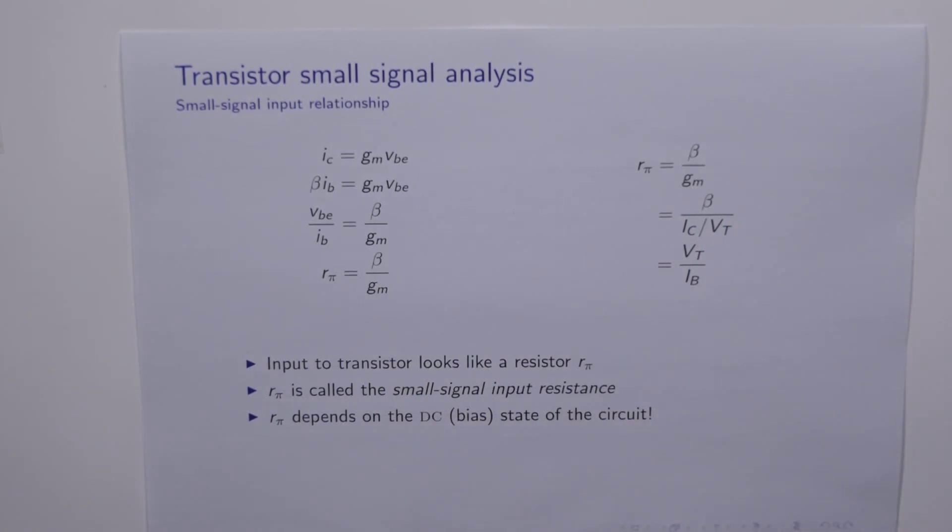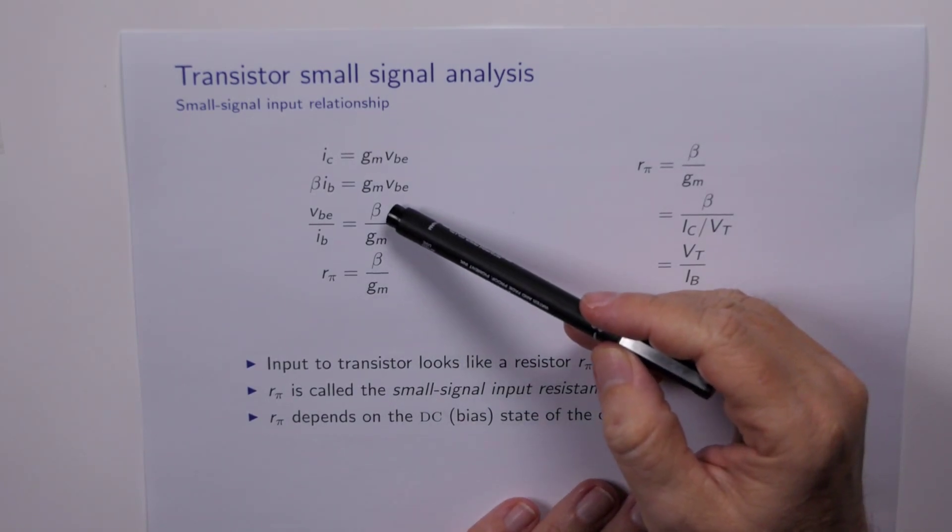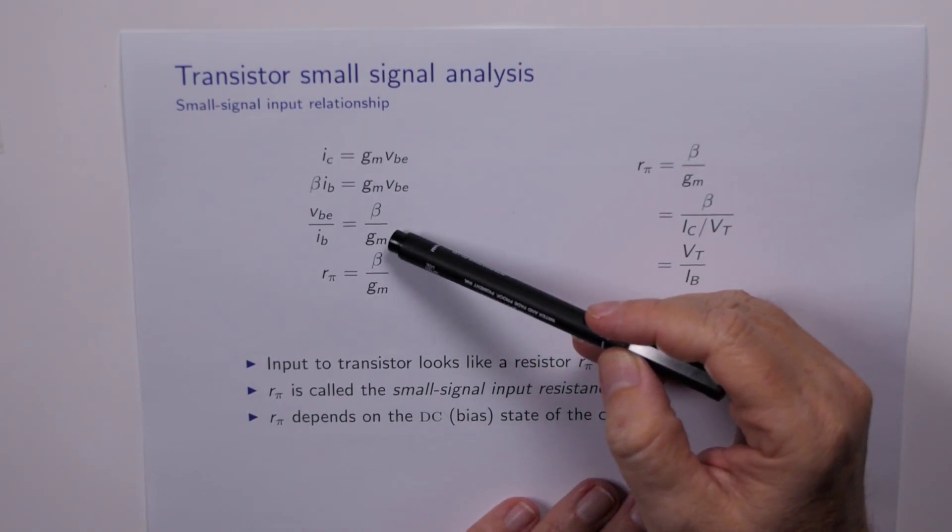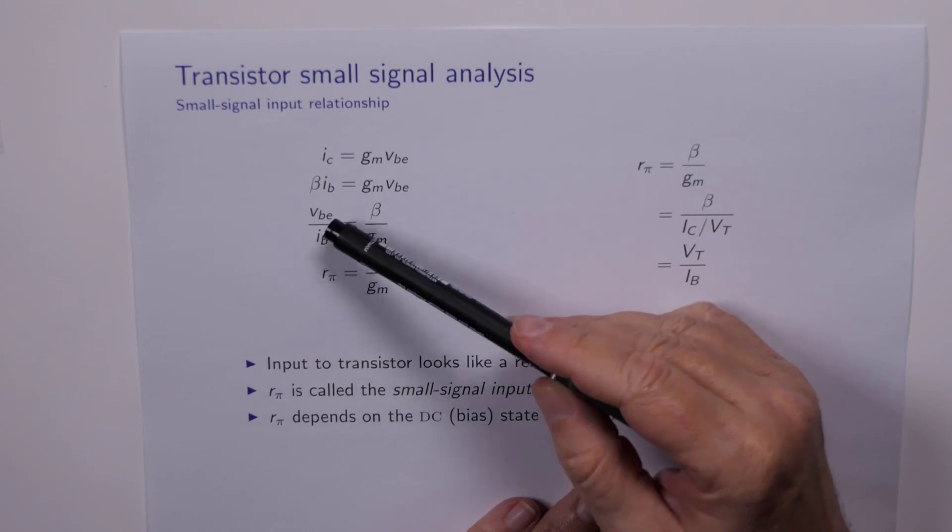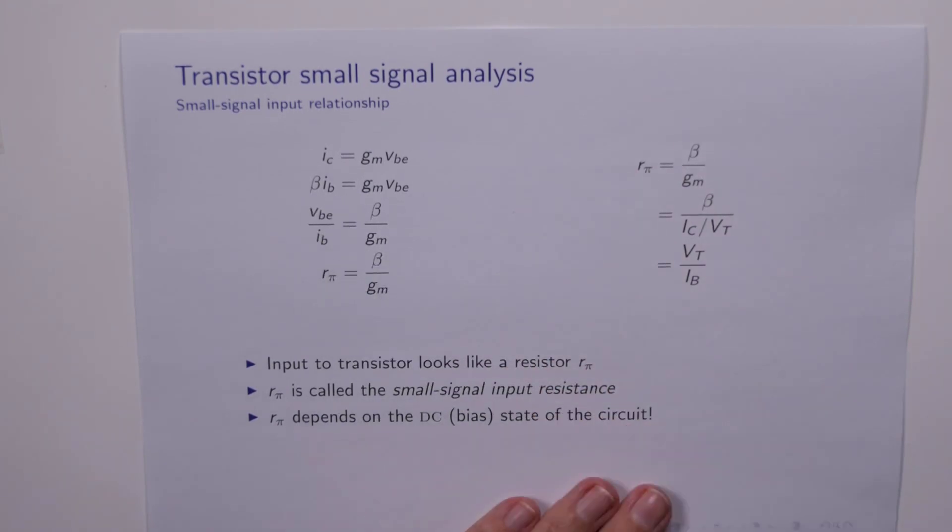Now VBE over IB is by definition the input resistance of the transistor. That's the small signal input resistance, and this turns out to be this very simple expression here. We give this ratio, the small signal input resistance, the special symbol R pi.